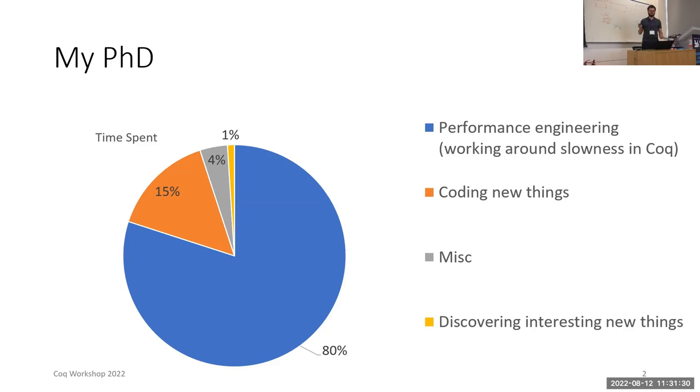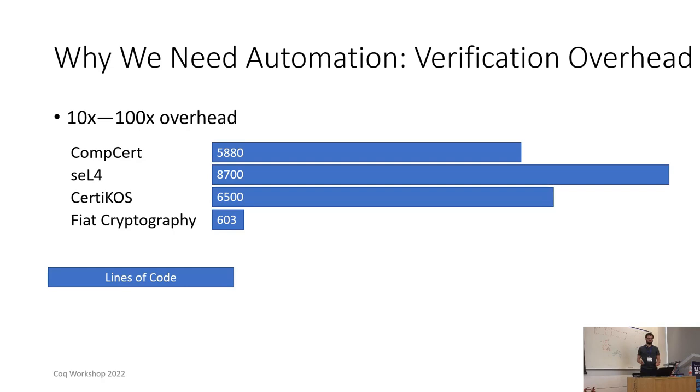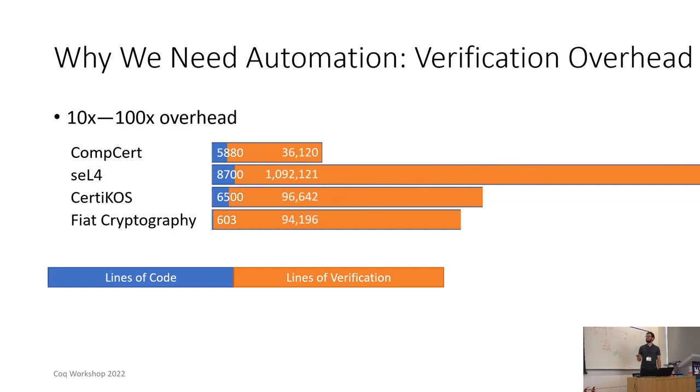In particular, there's performance issues with Coq's proof engine. In order to apply proof assistance to industry-scale applications, we need automation. The problem is that there is something like a 10x to 100x overhead in number of lines of verification over number of lines of code being verified. Here you can see the numbers for some successful verification projects. What this means is that if we want to verify even a modest program, we need to put in an enormous amount of effort to do the verification.